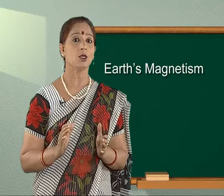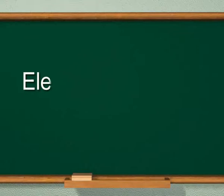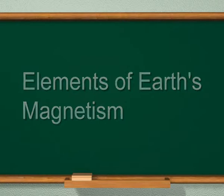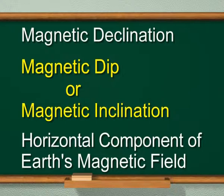Whenever we talk about Earth's magnetism, we use certain physical quantities which completely describe Earth's magnetic field. Such physical quantities are called elements of Earth's magnetism. These physical quantities are magnetic declination, magnetic dip or magnetic inclination, and the horizontal component of Earth's magnetic field.